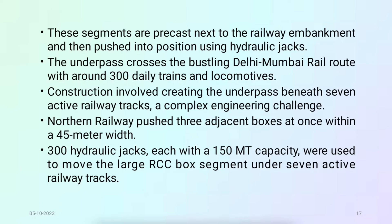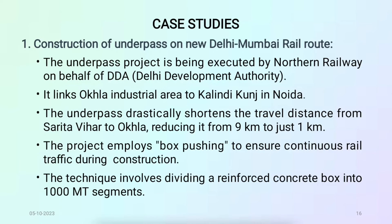The underpass crosses the busy Delhi–Mumbai rail route with around 300 daily trains. Construction involved creating the underpass beneath 7 active rail tracks, a complex engineering challenge. Northern Railway pushed 3 adjacent boxes at once within a 45-meter width. 300 hydraulic jacks, each with a 150 metric ton capacity, were used to move the large RCC box segments under seven active railway tracks. The conclusion of this case study shows that the travel distance from Sarita Vihar to Okhla was reduced from 9 km to just 1 km using box pushing technology.